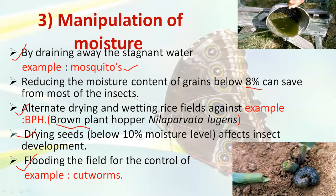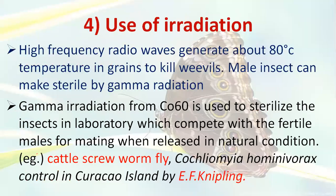Examples of pests controlled by moisture manipulation include mosquitoes, brown plant hopper in rice fields, and other stored grain pests. Flooding practices can also control cotton pests. This is why moisture manipulation is very important for pest control.